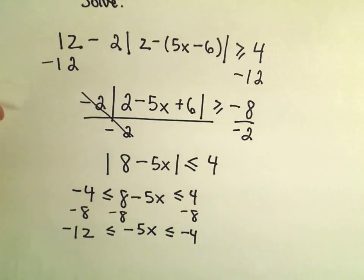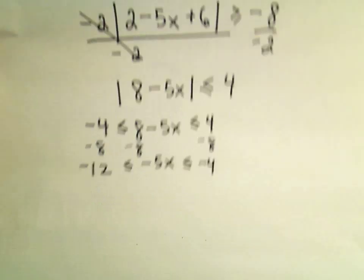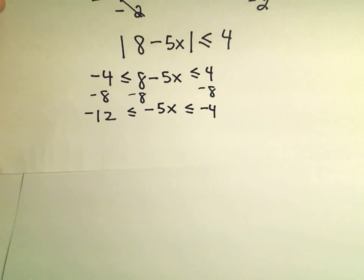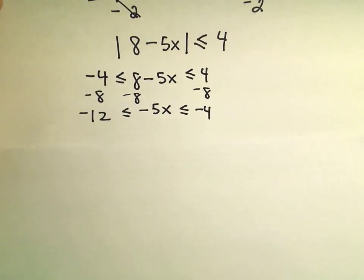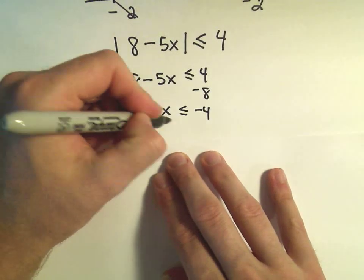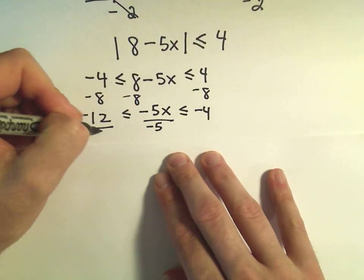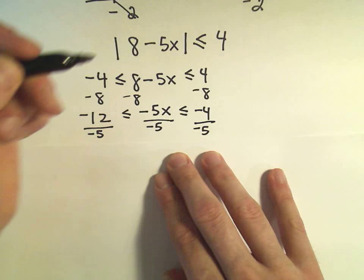And again, now simply to get the x by itself, I'm just going to divide everything by negative 5. Again, remembering that we have to flip our inequality in this case. So I'm going to divide by negative 5, divide by negative 5, divide by negative 5.